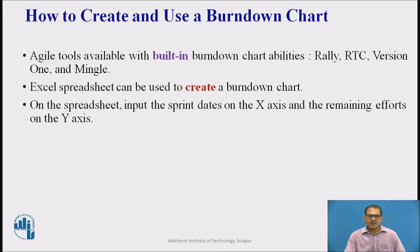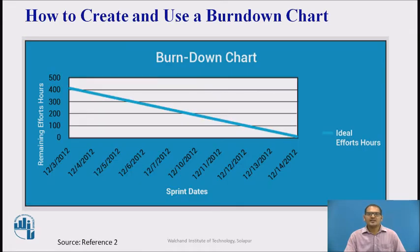On the spreadsheet, input the sprint dates on the X-axis and the remaining efforts on the Y-axis. Let us see an example of an ideal Burndown Chart shown. In this example, the sprint is at 2 weeks. The team consists of 7 members working 6 hours per day for a total of 420 hours.